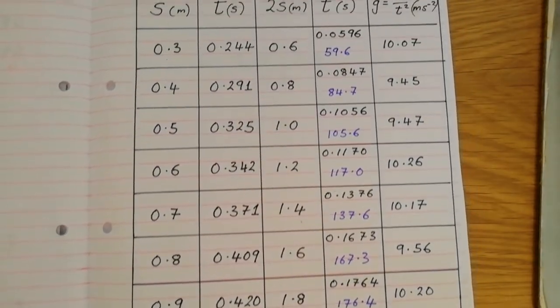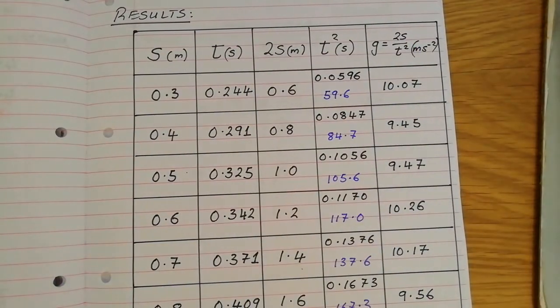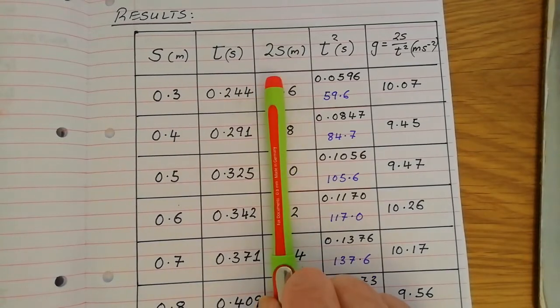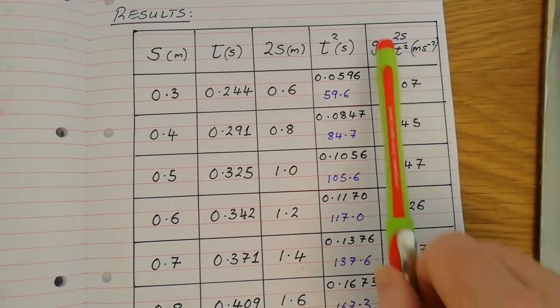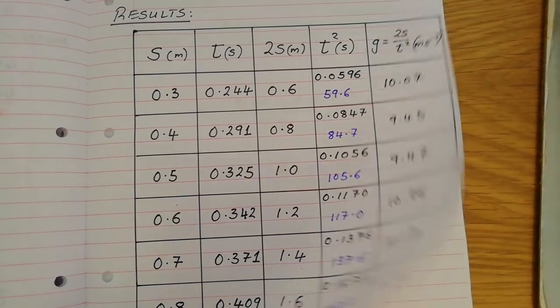I would take these results down in your experiment copy. I would put in the five columns. I would then, starting with that set of data, work out the 2s, work out the t squared, and then work out 2s divided by t squared, which is g the acceleration due to gravity. That isn't a very difficult thing to do.